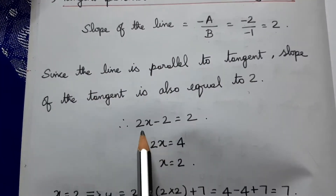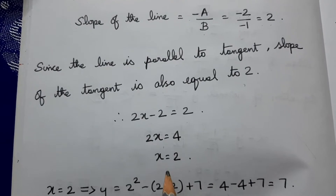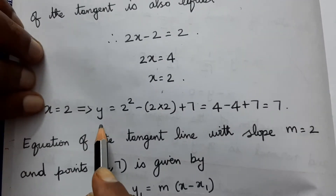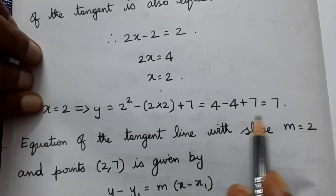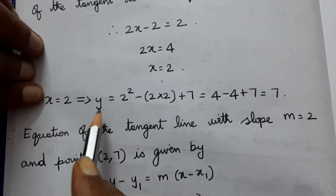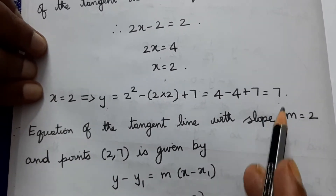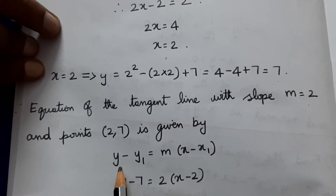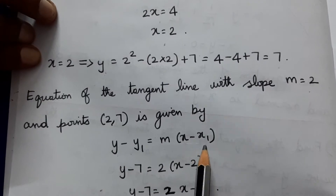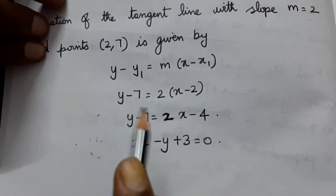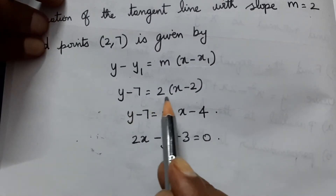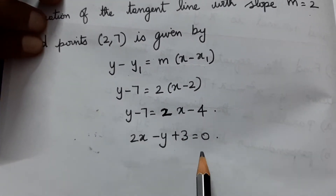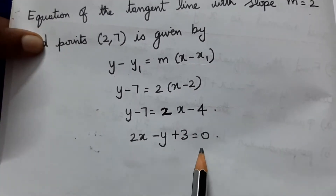Since the slope of the tangent equals 2, we set 2x - 2 = 2, giving x = 2. Substituting x = 2 into the curve gives y = 7. Using the point-slope formula y - y₁ = m(x - x₁), we get y - 7 = 2(x - 2), which simplifies to 2x - y + 3 = 0.